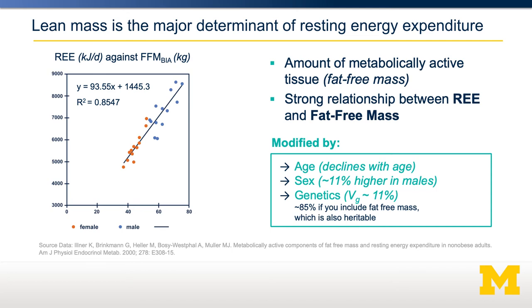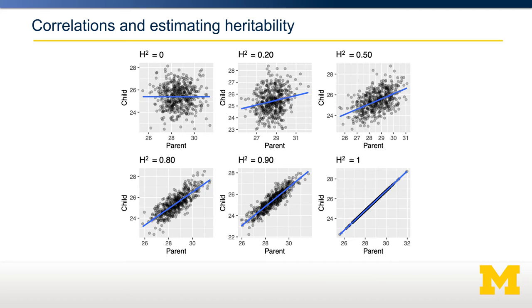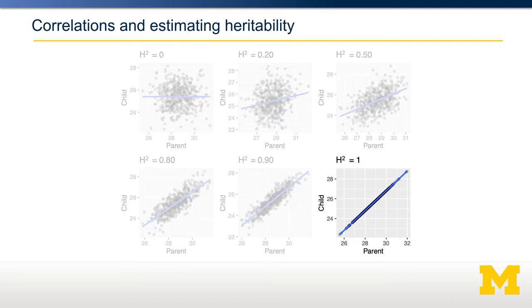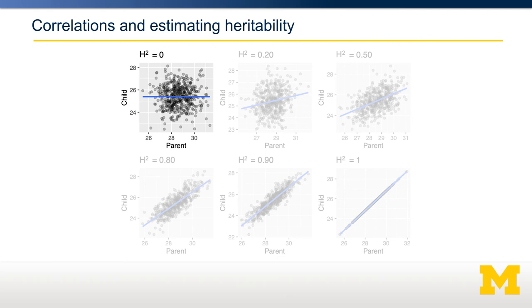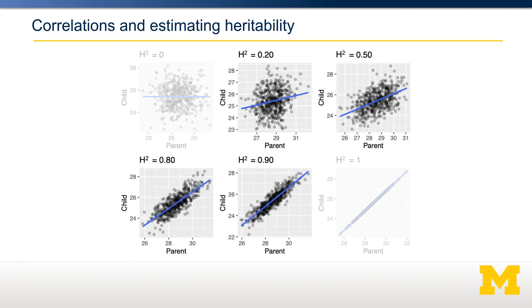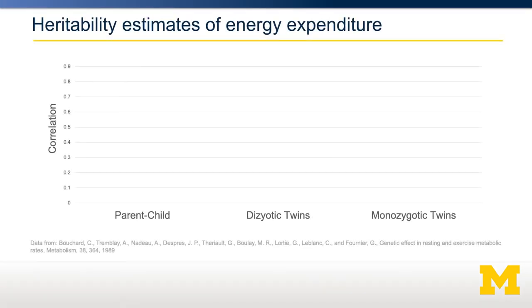What does that mean? Let's take a digression to talk about how traits are heritable. Shown here are six data plots looking at different relationships between a child and a parent — in this case, their energy expenditure. In the plot on the bottom right, the correlation coefficient is exactly 1, meaning if you know the parent's energy expenditure, you can predict with absolute certainty the child's energy expenditure. That would mean it is entirely genetic, with a heritability of exactly 1. On the top left is an example where there is no relationship between the parent and child's energy expenditure — the correlation coefficient would be 0. The other four graphs show heritabilities of 20%, 50%, 80%, and 90%, which are useful to keep in mind as we'll discuss many traits and their heritability throughout this course.